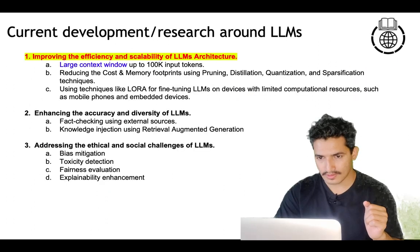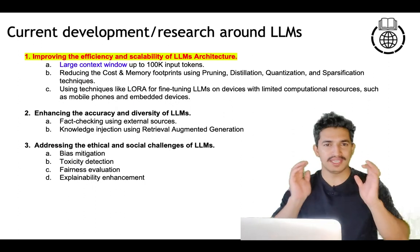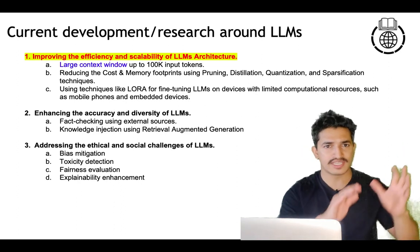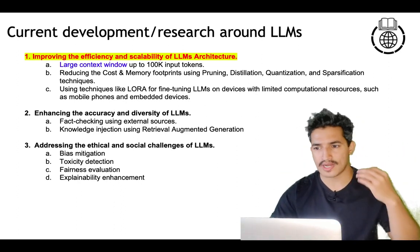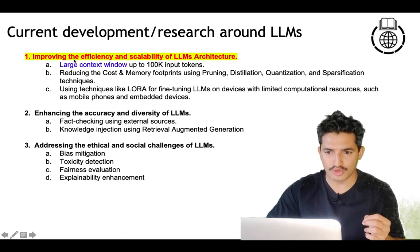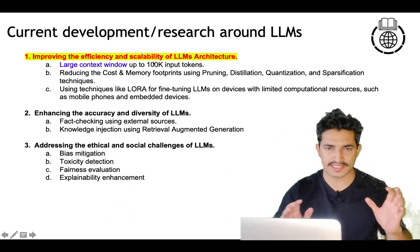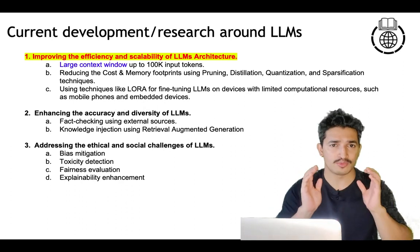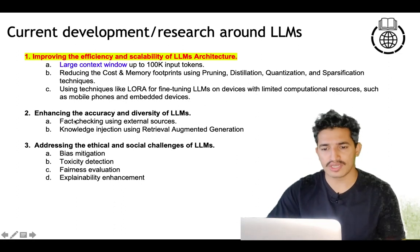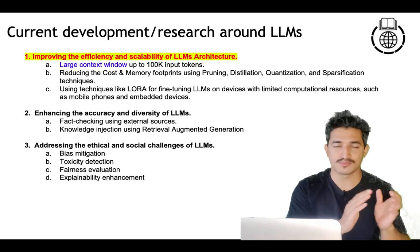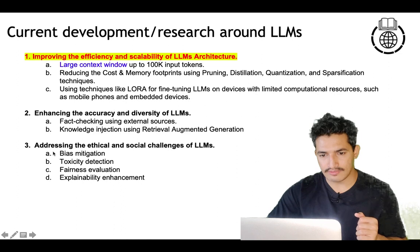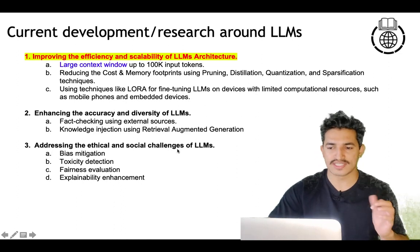Now coming to the main agenda of this video — since the arrival of these models, what are the developments and research going around LLMs? I have categorized them into three categories: the first is improving the efficiency and scalability of LLM architecture; the second is how can we enhance the accuracy and diversity of LLMs — making the output even better; and the third is addressing the ethical and social challenges of LLMs.